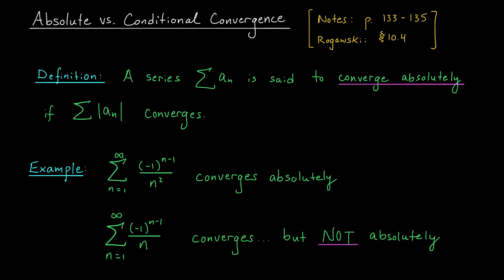Here's your definition. Suppose we have a series with terms a_n. We'll say that this series converges absolutely if, when you take the absolute value of each of its terms, this new series is convergent.